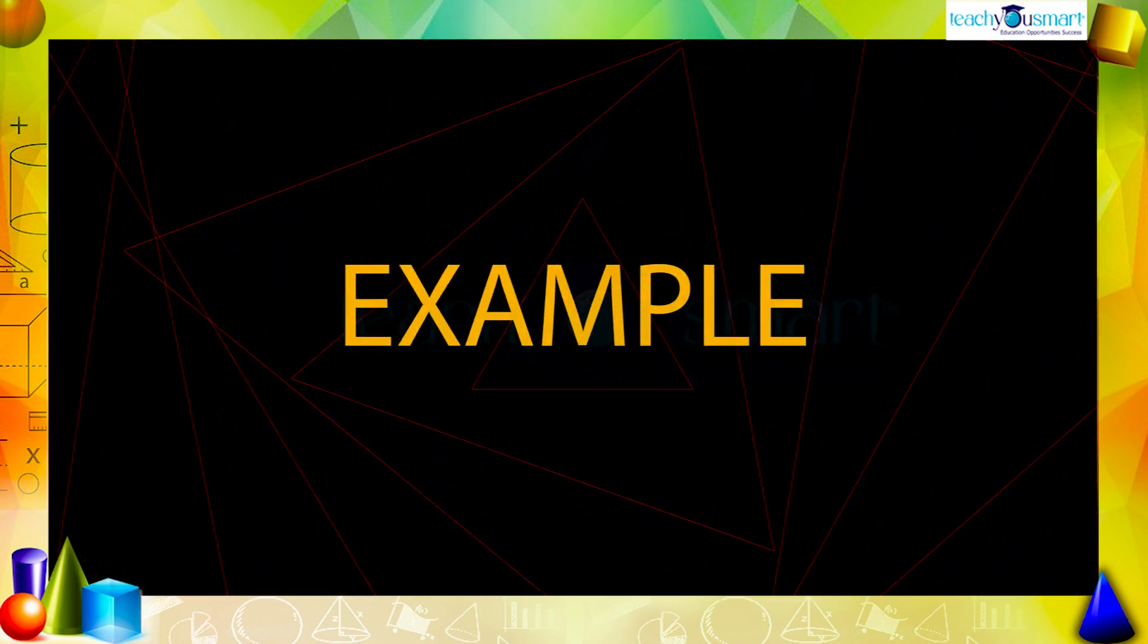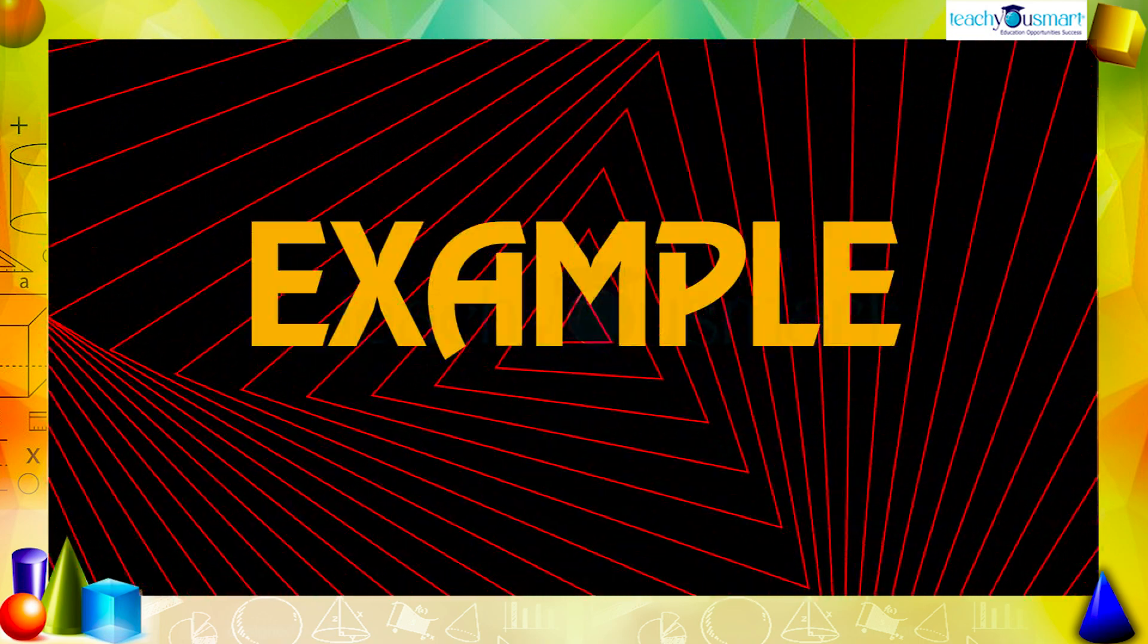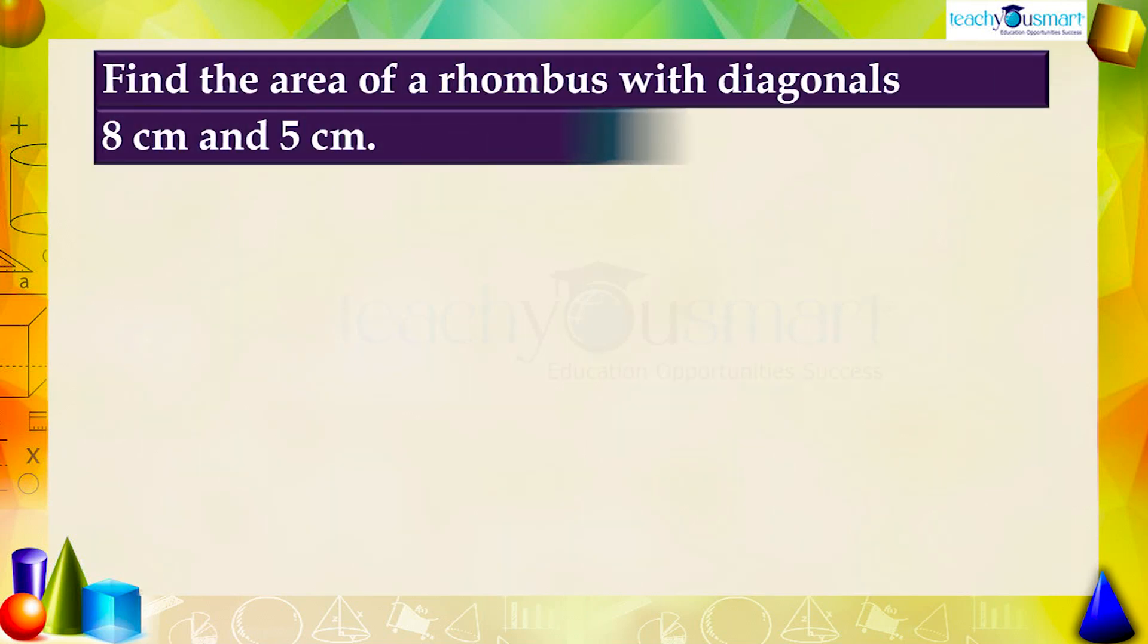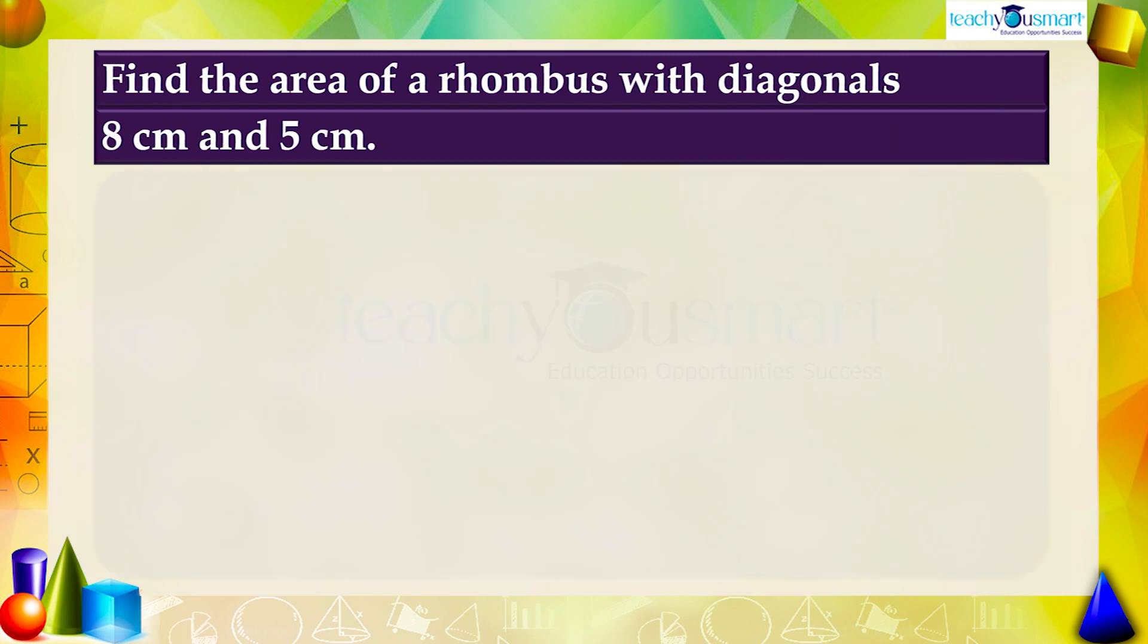Let's see an example. Find the area of a rhombus with diagonals 8 cm and 5 cm. Given that the length of the diagonals is 8 cm and 5 cm.